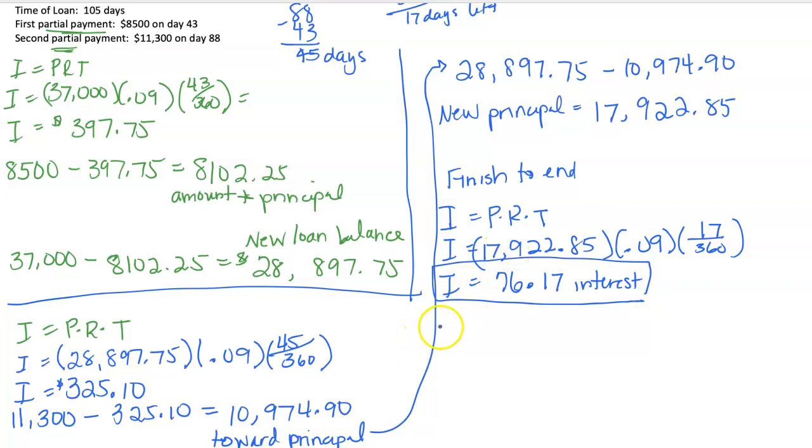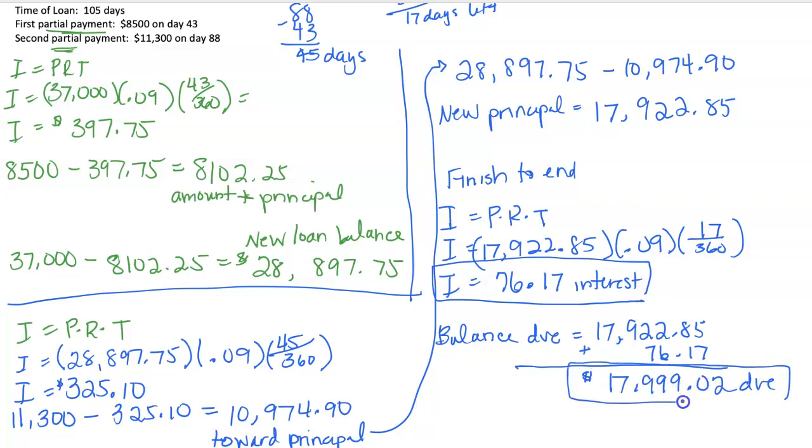And now let's find out our balance due at maturity. So we still owed $17,922.85. We also owe the $76.17. So the balance due at maturity is going to be $17,999.02. So on that last day of the loan, that's how much is due.